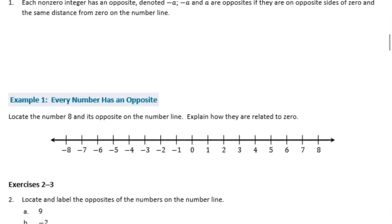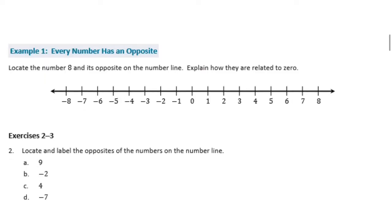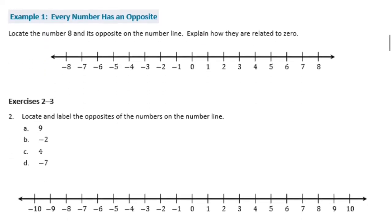Example 1: Locate the number 8 and its opposite on the number line. Explain how they are related to 0. So first we're going to locate the number 8 — 8 is right here on our number line.